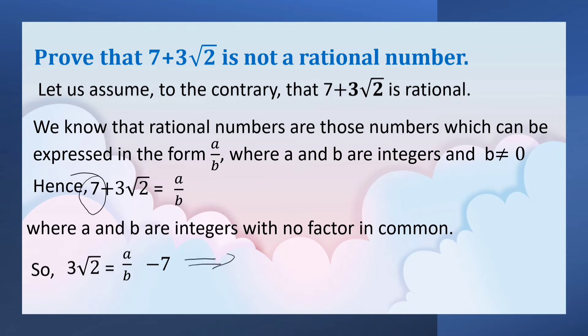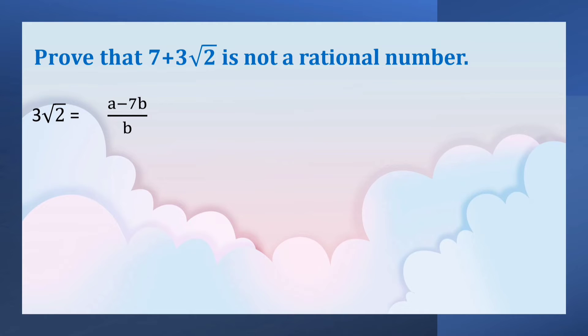Here it implies that 3 root 2 equals, taking LCM as b, a minus 7b by b. So, 3 root 2 equals a minus 7b by b.